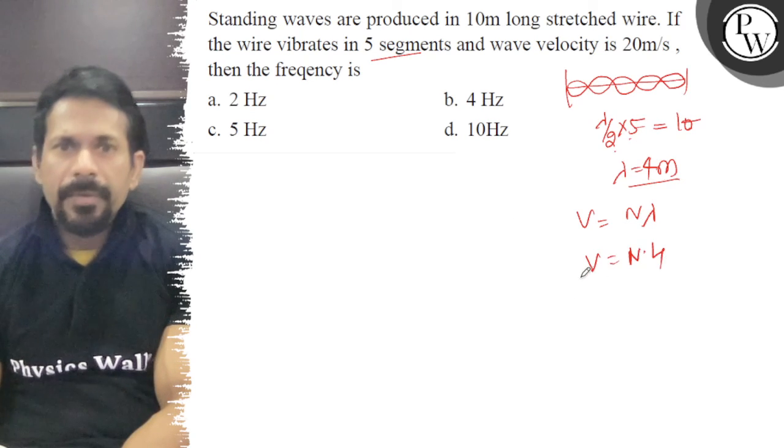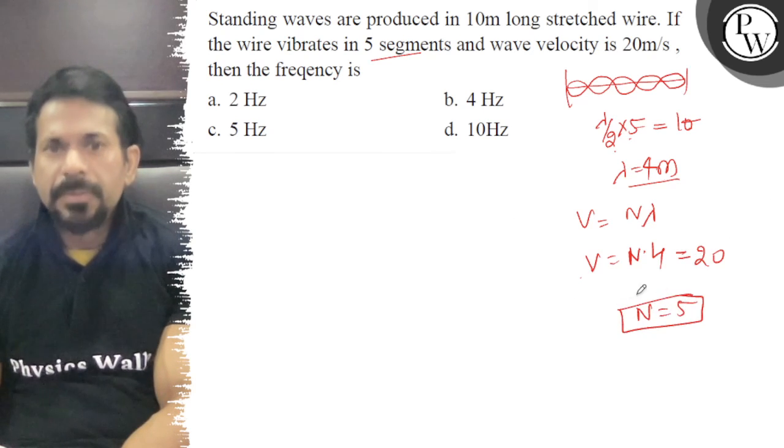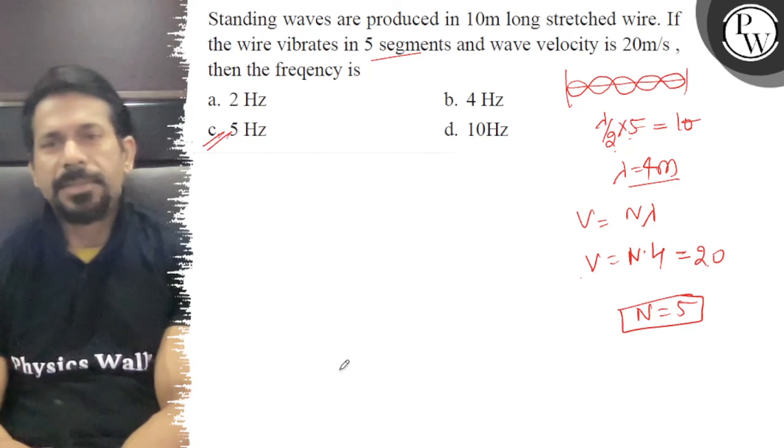V is 20, so n will be 5. Therefore, the right answer to the question is C. All the best.